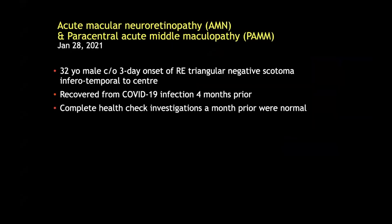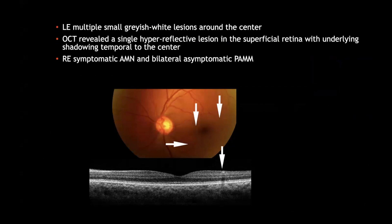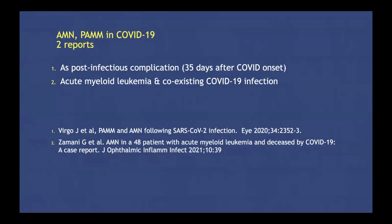In January this year, a 32-year-old male complained of sudden onset of scotoma in his right eye for the last three days. He had recovered from COVID-19 four months prior and all other investigations were negative. There was a deep retinal grayish-white lesion in the right eye corresponding to outer retinal layer disruption on OCT. Additionally, there were hyper-reflective lesions in the superficial retina on OCT with underlying shadowing. Similar lesions were seen in the other eye. He appeared to have right eye symptomatic AMN and bilateral asymptomatic PAMM. There are only two reports of these lesions in association with COVID-19 infection.